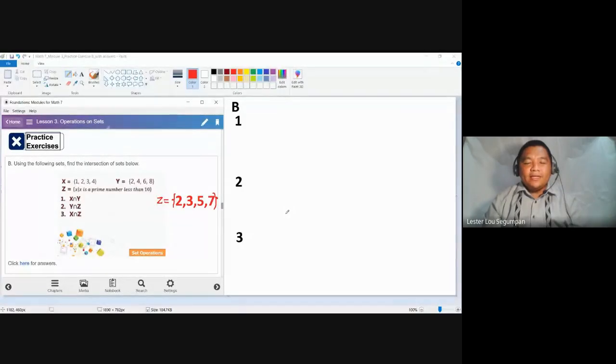Please be reminded that in the previous videos, we established that set Z written in set builder form as X such that X is a prime number less than 10, is equivalent to roster form containing the elements 2, 3, 5, and 7. I've already placed it here so we don't need to discuss why only four elements are found in set Z.